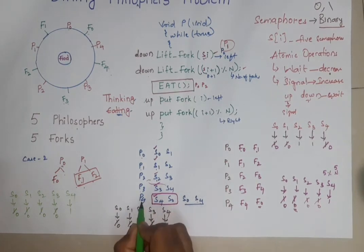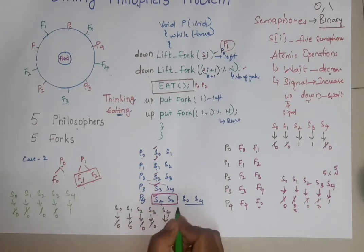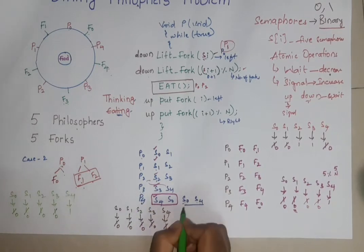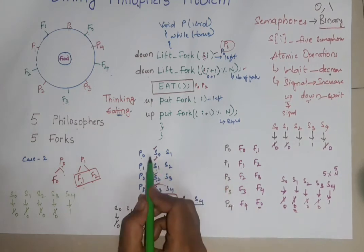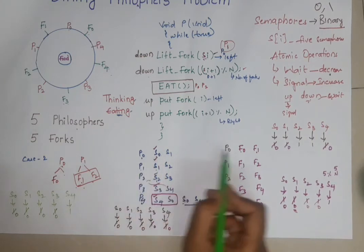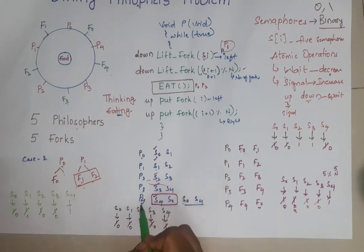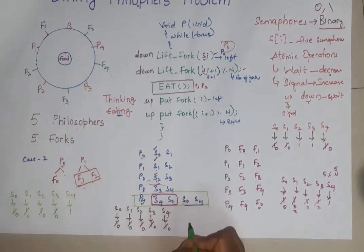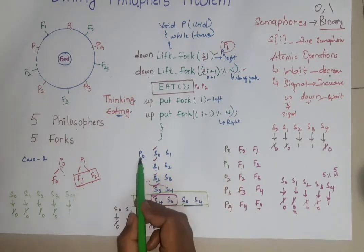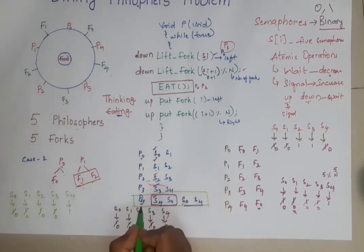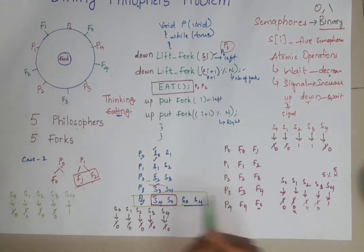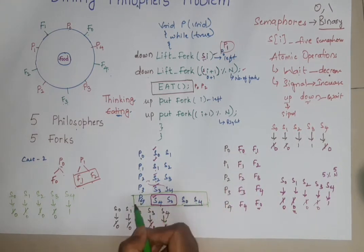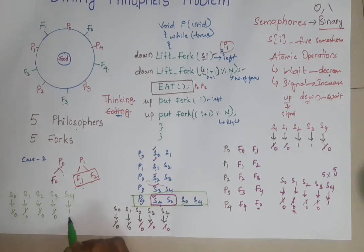And now what happens, as we have reversed the values, P4 now will go for S0. Can it take S0? No, because S0 is already with P0. F0 is already with P0. So P4 philosopher cannot take S0. Then what happens? This process is blocked. This process will be blocked because already F0 is there with the P0. So P4 cannot take the F0. So this process is blocked. So now which is free? S4 is free. S4 is initialized with 1 but no philosopher has made it down.